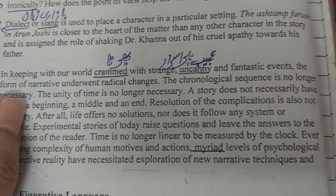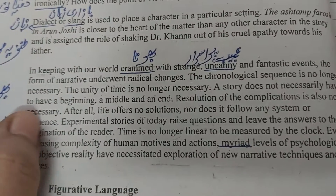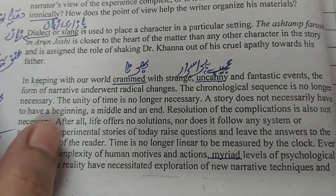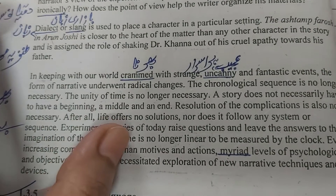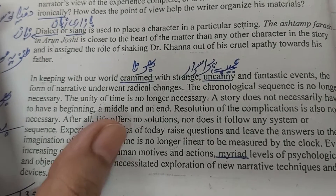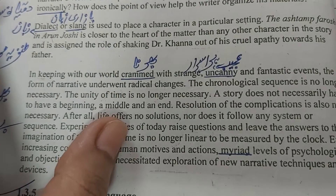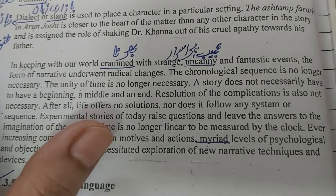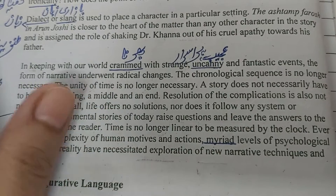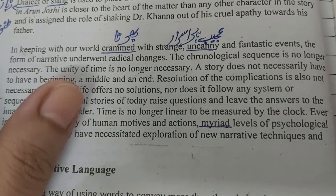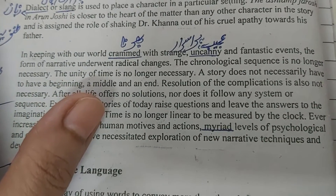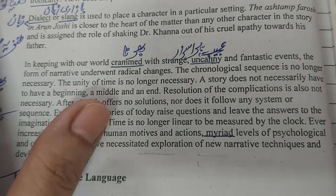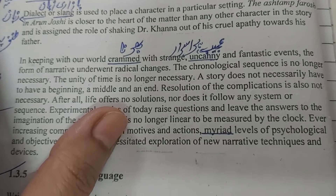A story does not necessarily have to have a beginning, a middle, and an end. All these points go against the rules of Socrates and Aristotle. The unity of time was really very important in classical thought — a particular story needs to have a beginning, a particular middle, and an appropriate end.